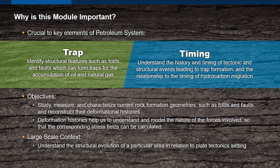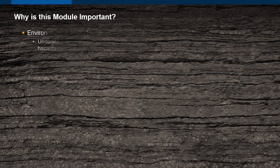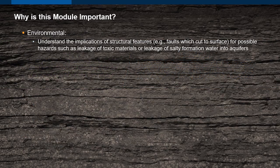It is important to understand the structural evolution of a particular area in relation to its plate tectonic setting. For example, structures and traps associated with an extensional tectonic setting are very different from those associated with a compressional tectonic setting. From an environmental perspective, we need to understand the implications of structural features such as faults which cut to surface for possible hazards such as leakage of toxic materials or leakage of salty formation water into aquifers.